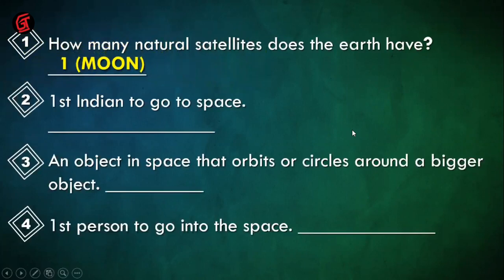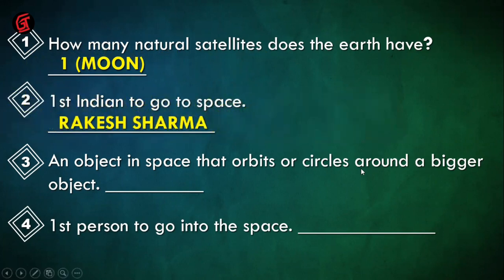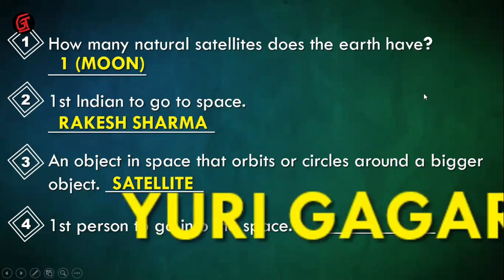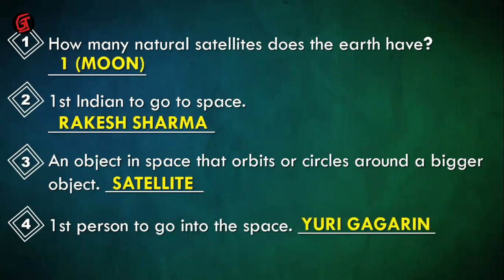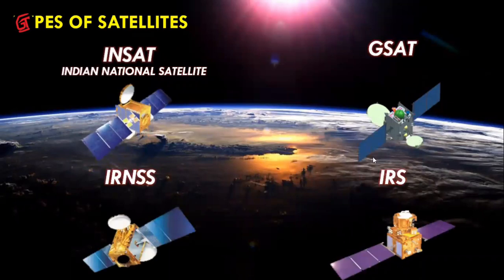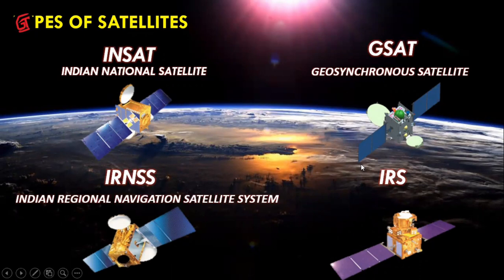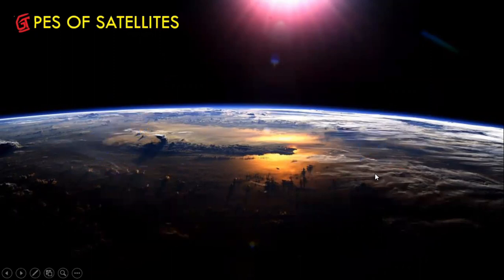The earth has only one natural satellite — the moon. The first Indian to go into space was Rakesh Sharma. The first person to go into space overall was Yuri Gagarin. Types of Indian satellites include INSAT (Indian National Satellite), GSAT (Geosynchronous Satellite), IRNSS (Indian Regional Navigation Satellite System), and IRS (Indian Remote Sensing Satellite).